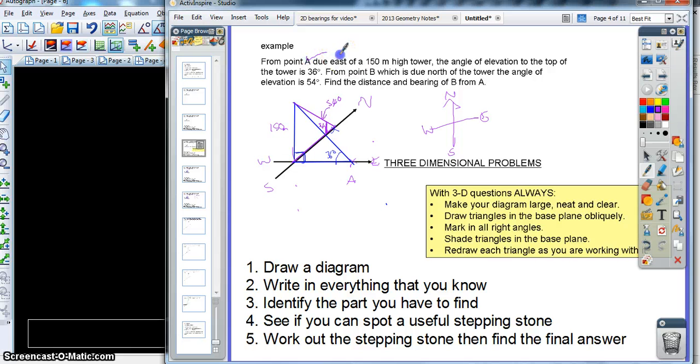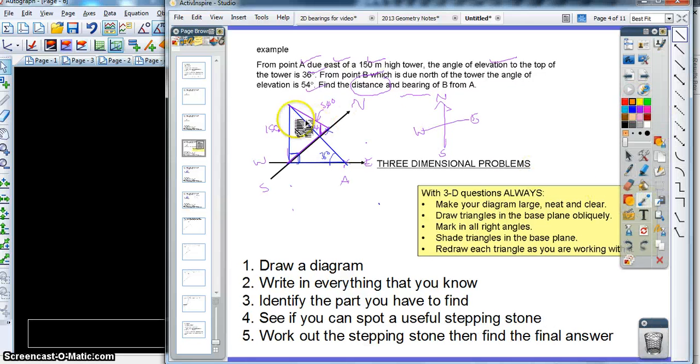So we've got point A, yes, due east, we've used that. 150 meter high tower, we've got that on. Angle of elevation is 36, we've used that. Point B is due north of the tower, the angle of elevation is 54 degrees. And then it says, find the distance and bearing of B from A. So we're saying, identify the part you have to find. Well, let's worry about the bearing in a minute. Let's start with the distance. The distance from A to B is going to be, I'll just put this one in a different color here so it stands out. That's what we're looking for.